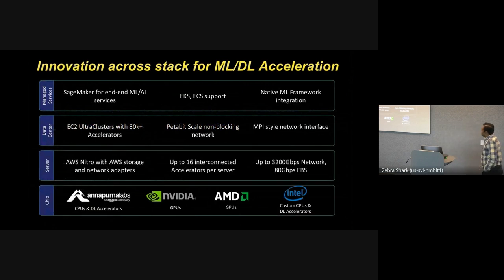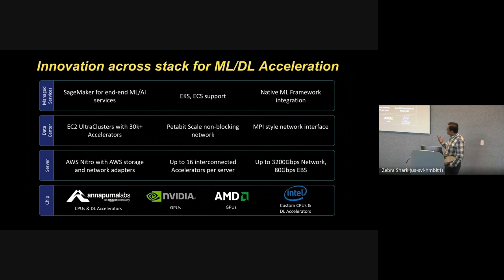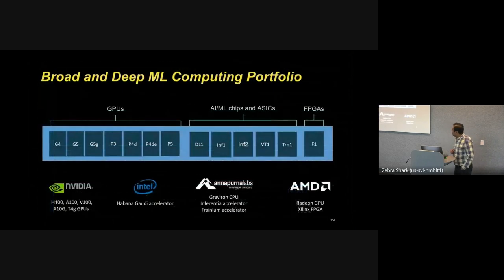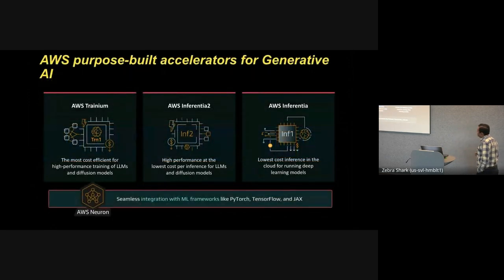At AWS, we leverage our deep understanding of workloads running in the largest public cloud, as well as Amazon internal services such as Alexa, Ads, and Retail on amazon.com, to build the best systems from the ground up. We innovate across the stack for machine learning acceleration — from chips to servers to data centers to managed services. We have a very broad and deep ML computing portfolio that spans CPUs, GPUs, custom ASICs, and FPGAs.